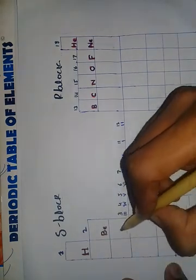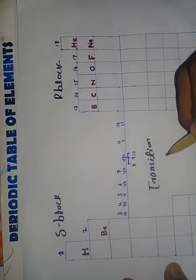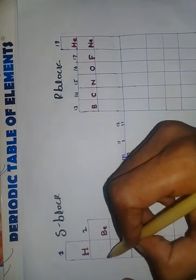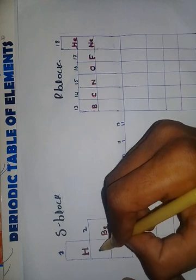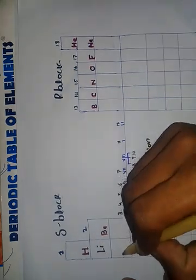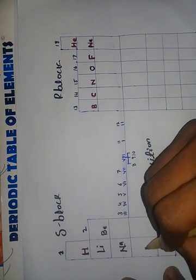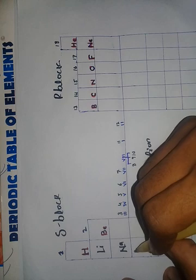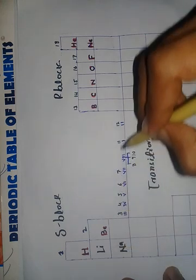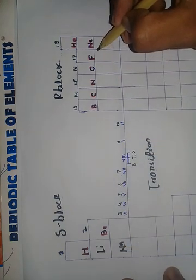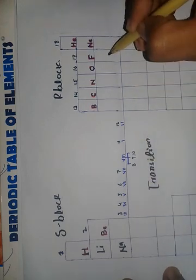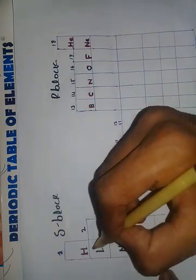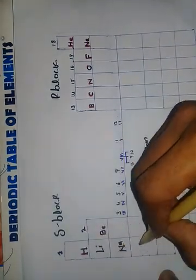The first group and the second group involve transition elements. The chemical properties are similar within a group — for example, hydrogen, lithium, and sodium. The whole group shares similar electron configuration and chemical properties.